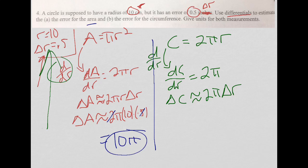And then I plug in my values from here again. So delta C equals 2 pi times delta R, which is 0.5, giving me pi. And then it actually asks for units. So let's say they're centimeters. This would be centimeters. And since I'm talking about delta A, the units for area are centimeters squared.